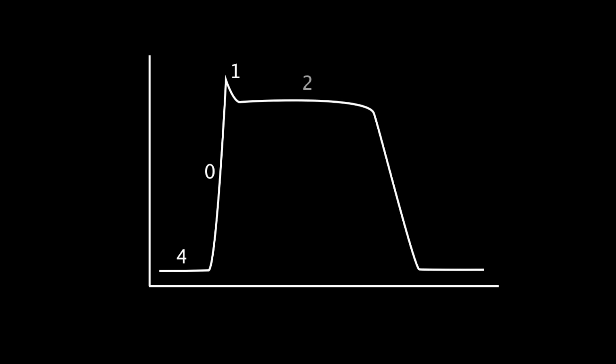Phase 2 is the plateau phase. This phase is a very slow repolarization and essentially has a balanced charge. Phase 3 is rapid repolarization, which will cause an overall negative charge.